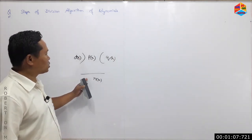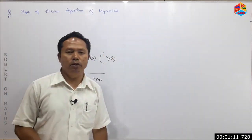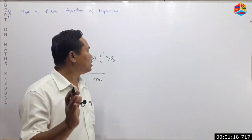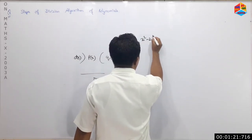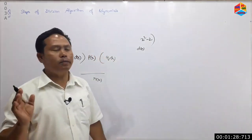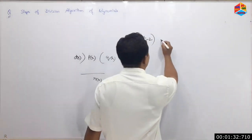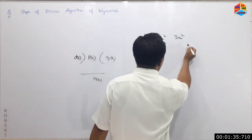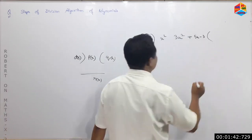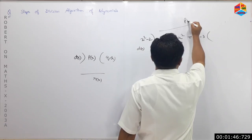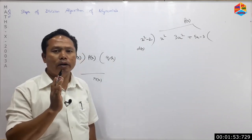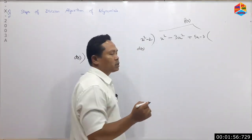Now we have to do the division of p(x). The division of p is equal to p(x) equals x cubed minus 3x squared plus 5x plus 5, divided by x minus 3. This is the dividend p(x): x cubed minus 3x squared plus 5x minus 3.